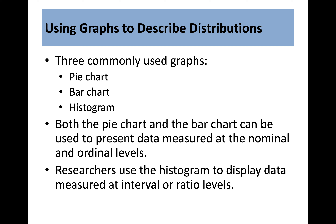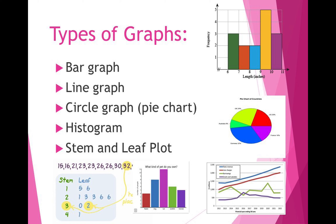Three commonly used graphs are the pie chart, bar chart, and histogram. Both the pie chart and the bar chart can be used to present data measured at the nominal and ordinal levels. Researchers use the histogram to display data measured at interval or ratio levels. The types of graphs include: a bar graph, a line graph, a circle graph or pie chart, a histogram, and a stem and leaf plot.